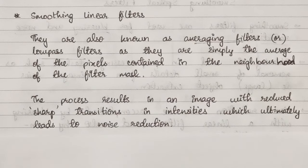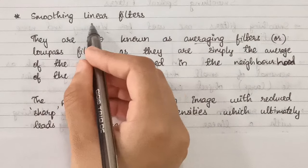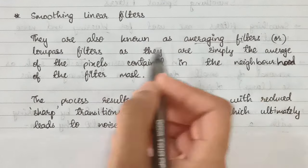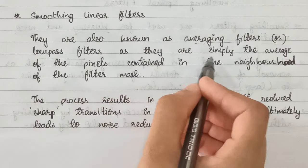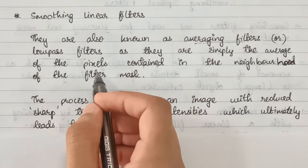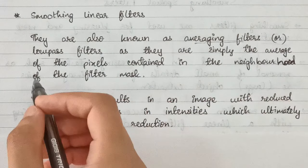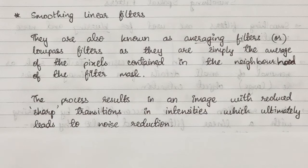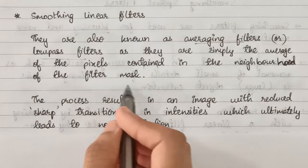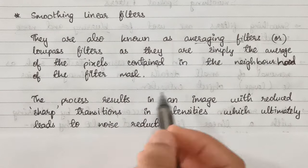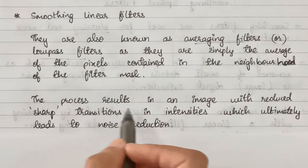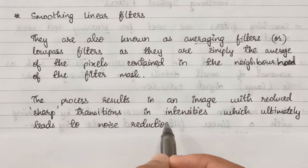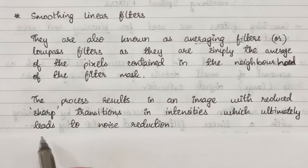Smoothing linear filters are also known as averaging filters or low pass filters, as they are simply the average of the pixels contained in the neighborhood of the filter mask. To perform this operation we need something known as a filter mask. Because of the averaging, the process results in an image with reduced sharp transitions in intensities, which ultimately leads to noise reduction.